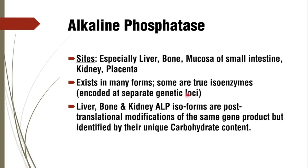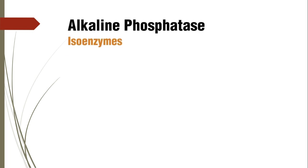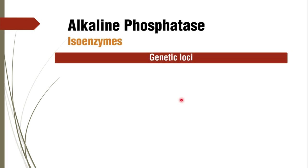During post-translational modification of the same gene product, a unique carbohydrate content is added to the structure. Because of that uniqueness you can identify the liver isoform, bone isoform, and kidney isoform. We will discuss how the isoenzymes of alkaline phosphatase are synthesized.